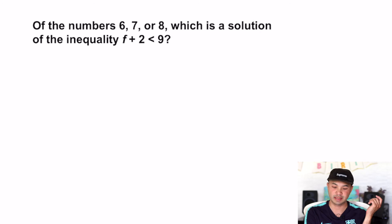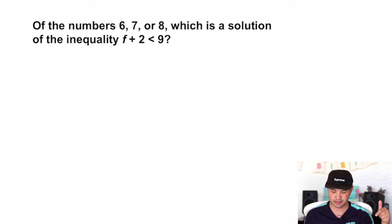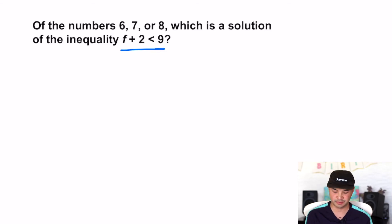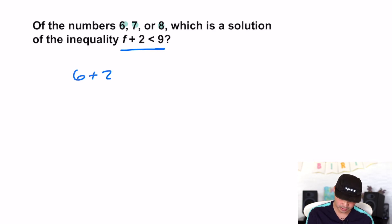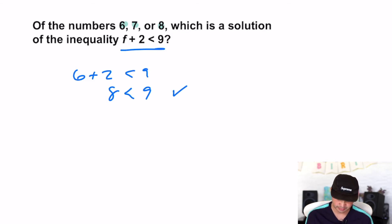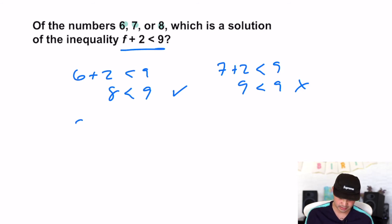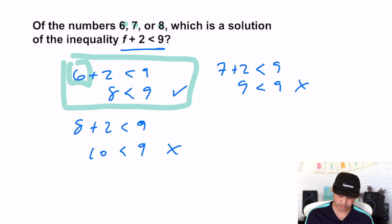Let's look at some simple examples: which of the numbers six, seven, or eight is a solution to the inequality n + 2 < 9? We just plug them in. Six plus two is eight — is eight less than nine? Yes, that is a solution. Seven plus two is nine — is nine less than nine? No, nine is not less than nine, nine equals nine. Eight plus two is ten — is ten less than nine? No. So the only true one is six. Six is a solution.